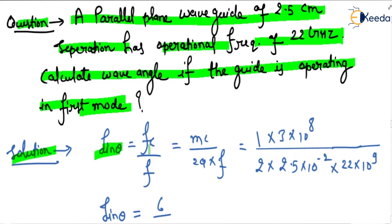So the solution is: sin theta equals fc by f. fc is mc by 2a upon f.